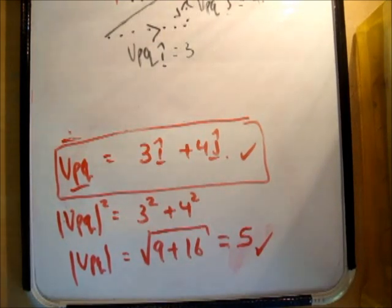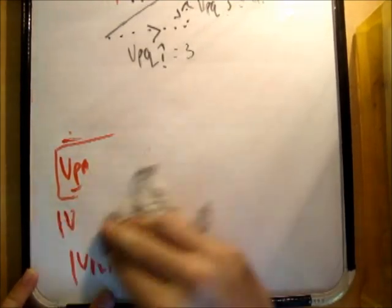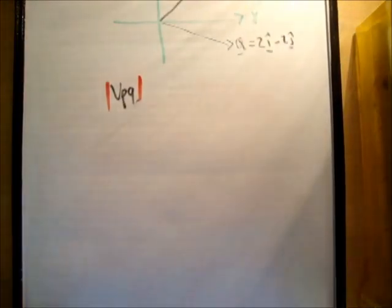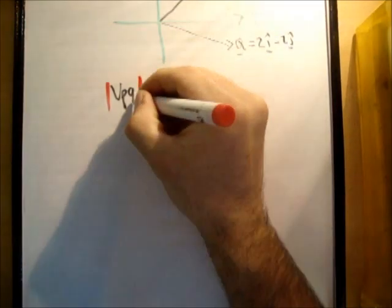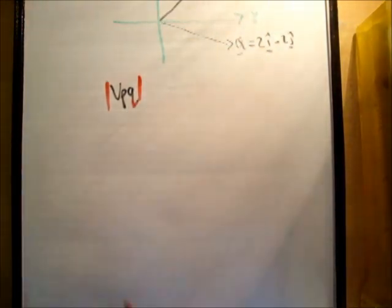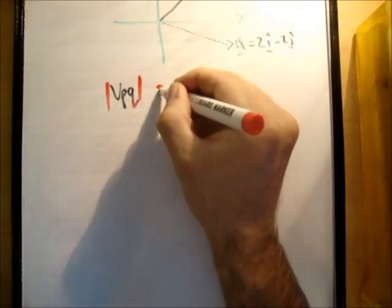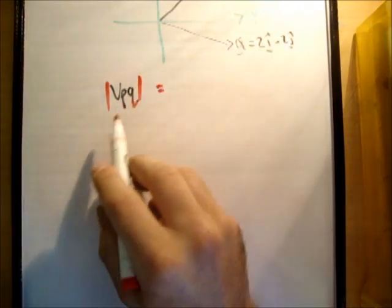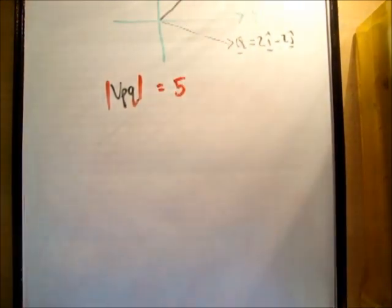The next thing we're asked to do is find after how long will the two ships lose sight of each other if their visibility is 20 kilometers. So once again, you need to just think about what's going on. We're saying, by using the vector V, P, Q, that Q thinks he's stationary. He will say, I'm stationary, and P is moving away from me. And we found out that the magnitude of this vector, how fast P is moving away from the not moving Q, is 5.